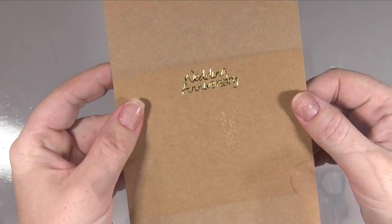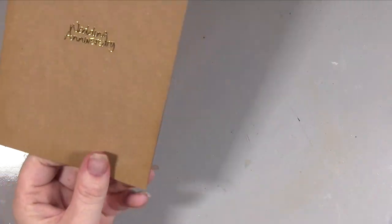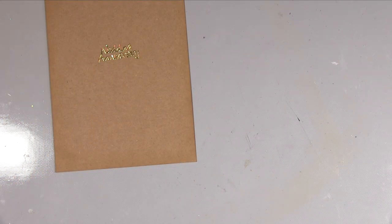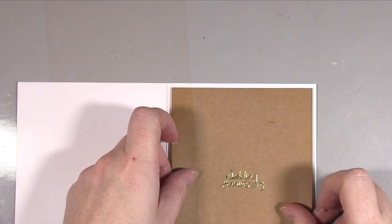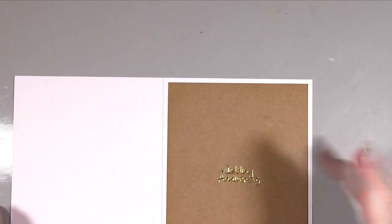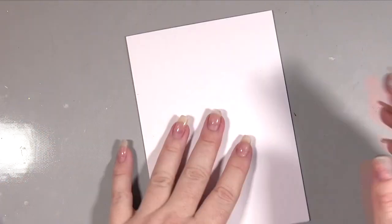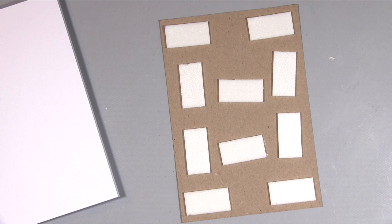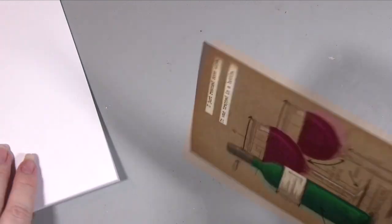Before carrying on with the outside I wanted to work on the inside. So I took a piece of craft card the same size as the layer on the front. I added a gold peel-off sticker and I used the ink to distress around the edges as well. Then I just stuck that down using some tape to the inside of my white card base.